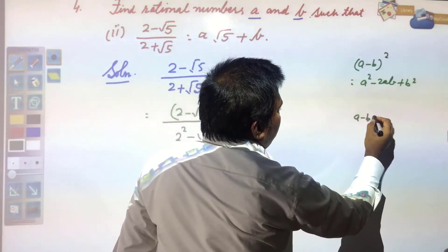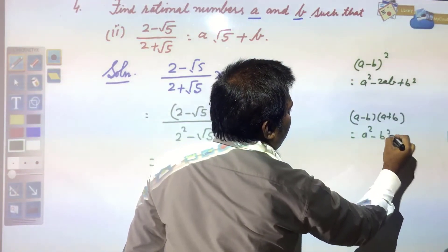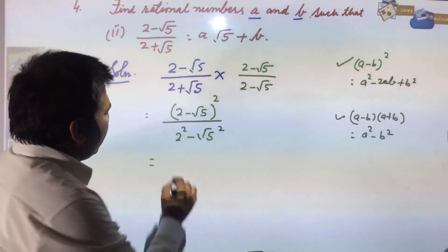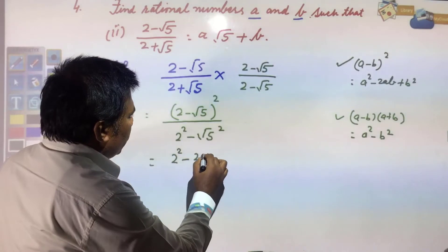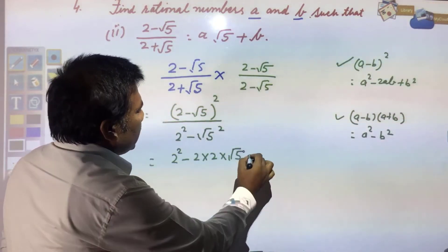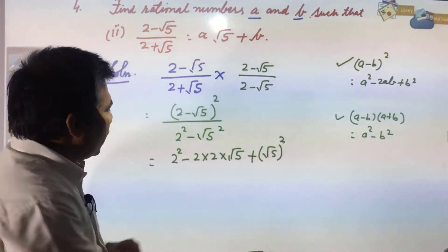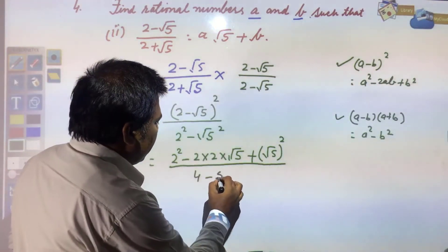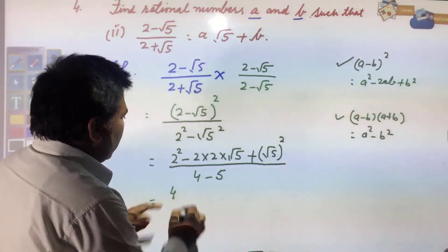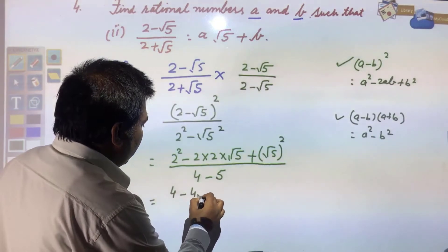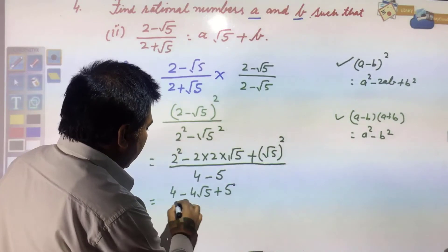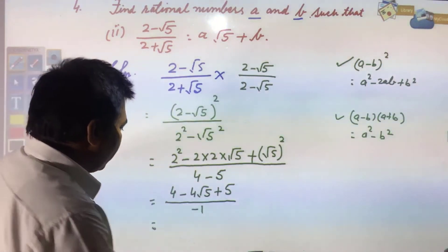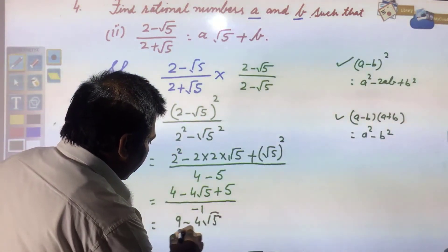And (a - b)(a + b) = a² - b². So applying both formulas: the numerator is 4 - 4√5 + 5, and the denominator is 2² - (√5)² = 4 - 5 = -1. So we get (4 + 5 - 4√5) / (-1) = (9 - 4√5) / (-1).